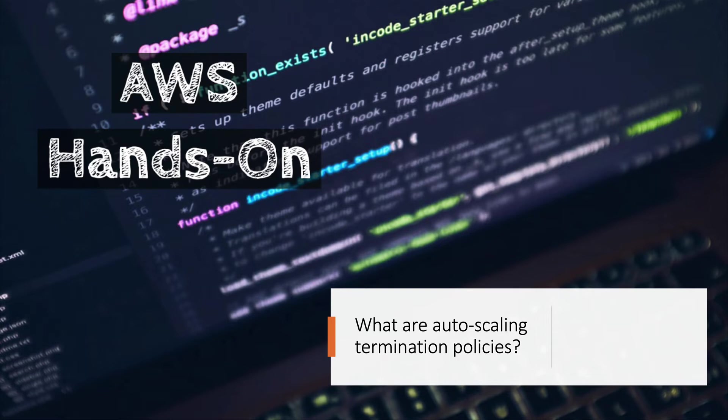Another question from auto scaling — one I ask myself when taking interviews — is: what are auto scaling termination policies? This is basically how auto scaling decides which instance to terminate during a scale-in event. There is a default policy, which I believe relates to the oldest instance and the oldest launch configuration. You can also create your own termination policy to control how auto scaling terminates your instances.